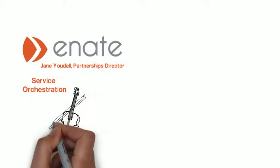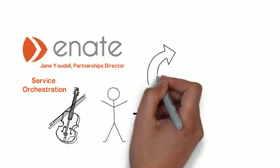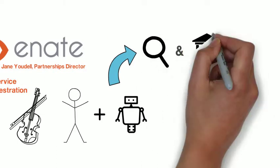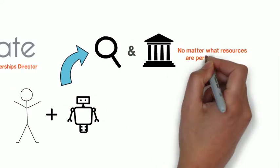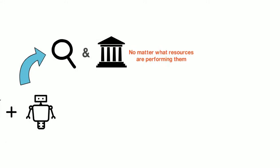Service orchestration is all about orchestrating work between human and digital workers, providing visibility and governance of processes no matter what resources are performing them.